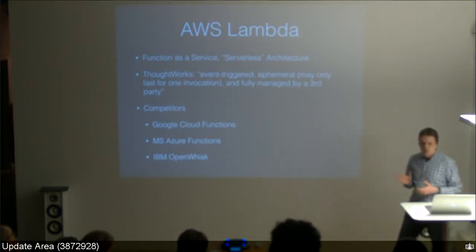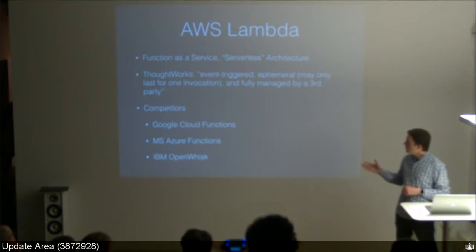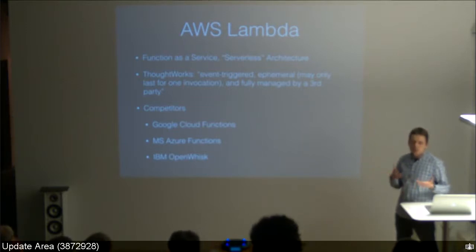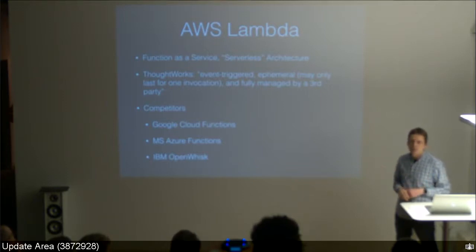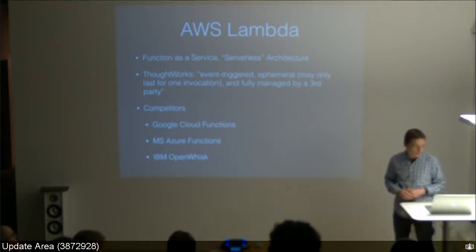There are a couple of competitors in this space: Google Cloud Functions, Azure has something, IBM OpenWhisk. But usually when people talk about serverless and function as a service, they talk about Amazon Lambda — that's the most well-known service. OpenWhisk is interesting because from the start they natively support executing Swift code, whereas with Lambda I'll show you how to do this.